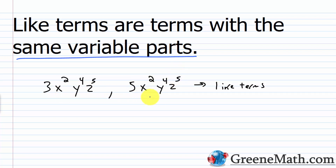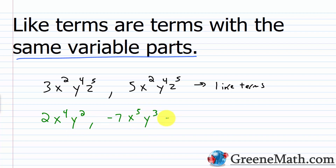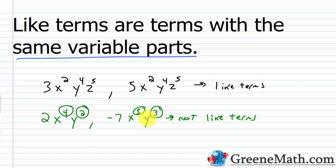You have to have the same variables — an x and x, a y and a y, a z and a z — and each copy of that variable has to be raised to the same power. So x must be raised to the second power in each case, y to the fourth, z to the fifth. For example, 2x to the fourth power y squared and negative 7x to the fifth power y cubed are not like terms — the x exponents are 4 and 5, and the y exponents are 2 and 3. All it takes is one mismatch.